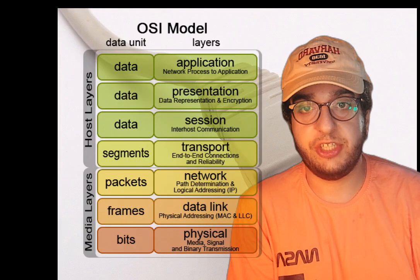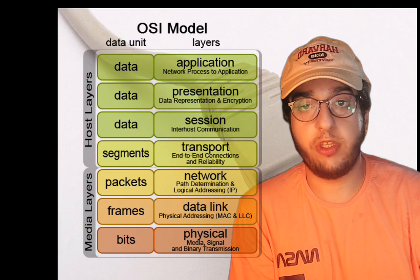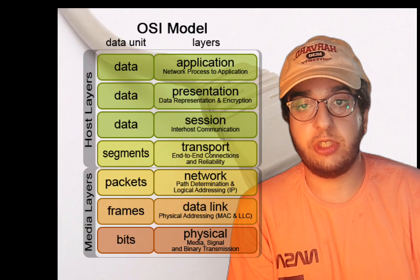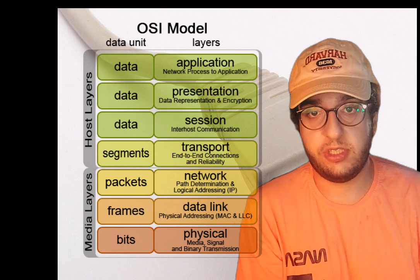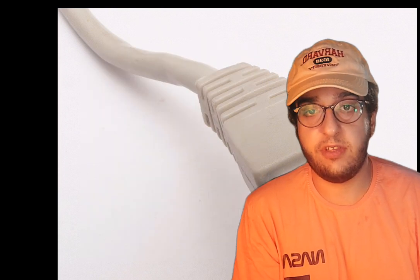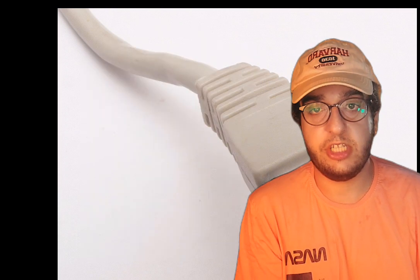The OSI model is a conceptual standardization for the functions of telecommunication and computing systems, and it is categorized into seven different layers. Each layer in the network has a specific task assigned to it.